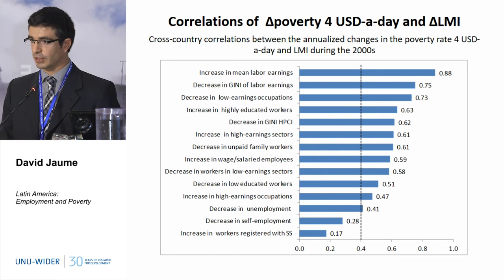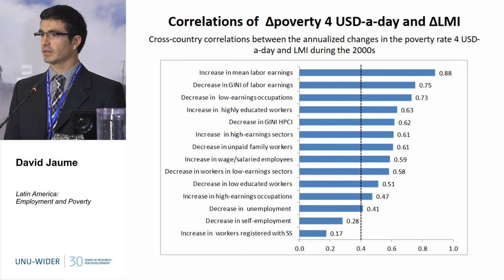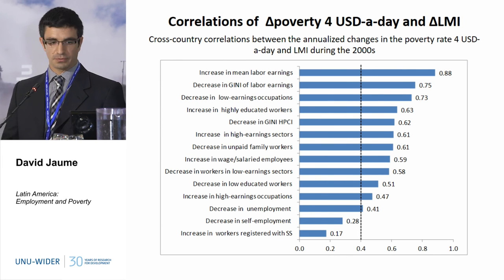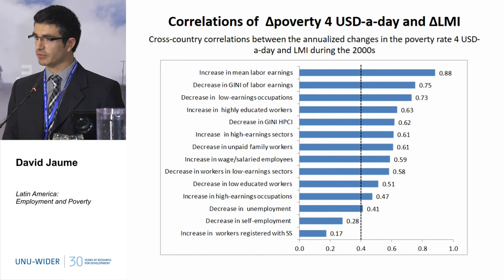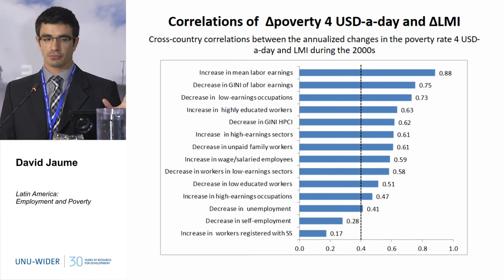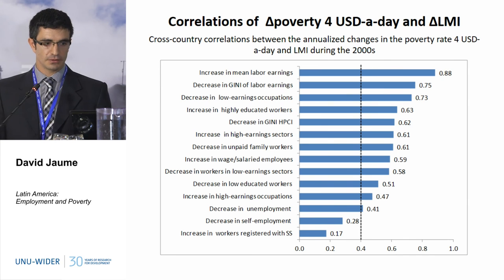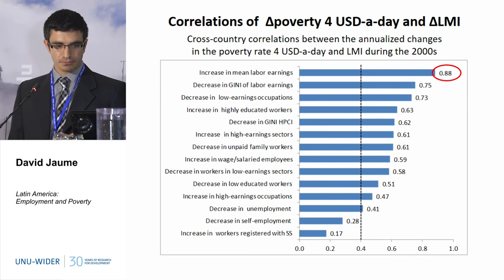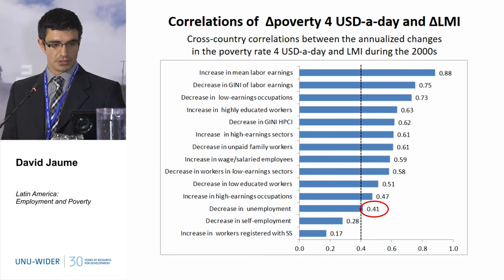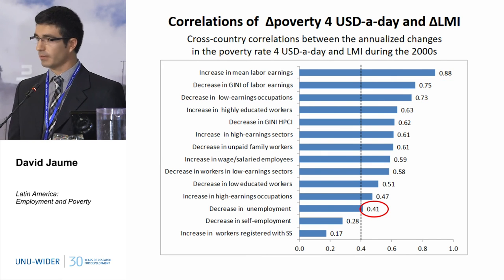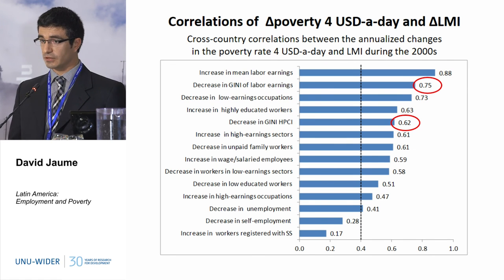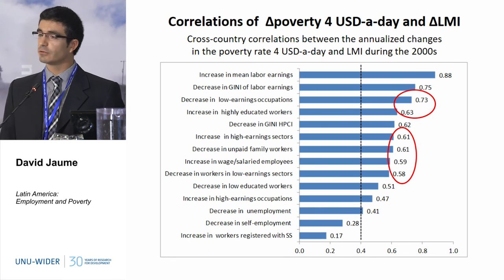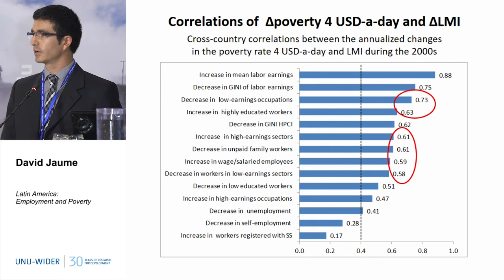This table shows the correlations between reductions in poverty and changes in each one of the labour market indicators we analyze. Each of these numbers represents the movement in the welfare improvement direction, meaning that reductions in poverty tend to be correlated with increases in mean earnings, decreases in unemployment, decreases in inequality — and these correlations are quite high — and also with improvements in the job mix of the economy.